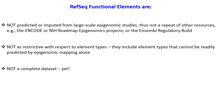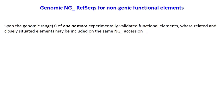It's also important to remember that since this is a new data set and we just had an initial release, it is not complete yet, so you may not find your favorite gene regulatory element in the data set at this point. The genomic RefSeqs we are making for these functional elements will have NG accession prefixes. They will span the genomic range of one or more experimentally validated functional element, where we group closely situated and highly related elements together — for example, a cluster of enhancers that regulate the same gene will be included on the same NG accession.